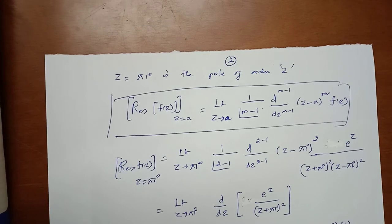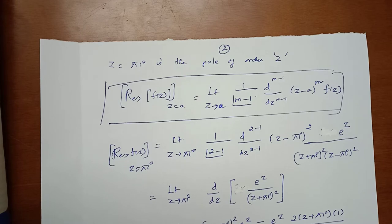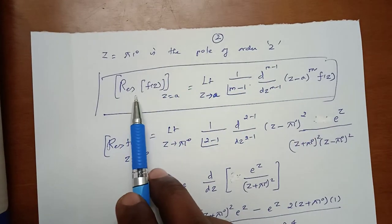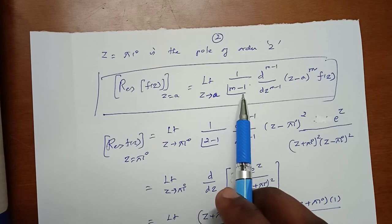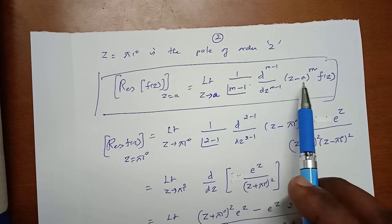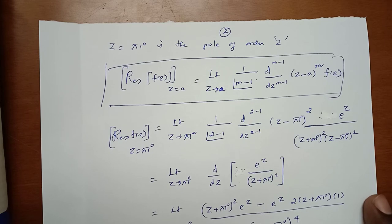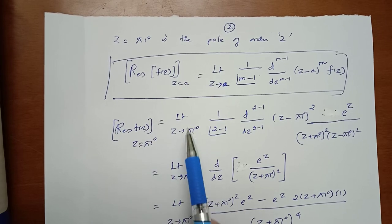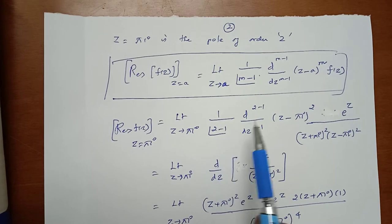Both z = πi and z = −πi are poles of order 2 and both lie within the circle. To compute the residue at a pole of order m, we apply the formula: Res[f(z), z=a] = lim(z→a) [1/(m−1)!] · d^(m−1)/dz^(m−1) [(z−a)^m · f(z)]. We first compute the residue at z = πi, where the order m = 2.